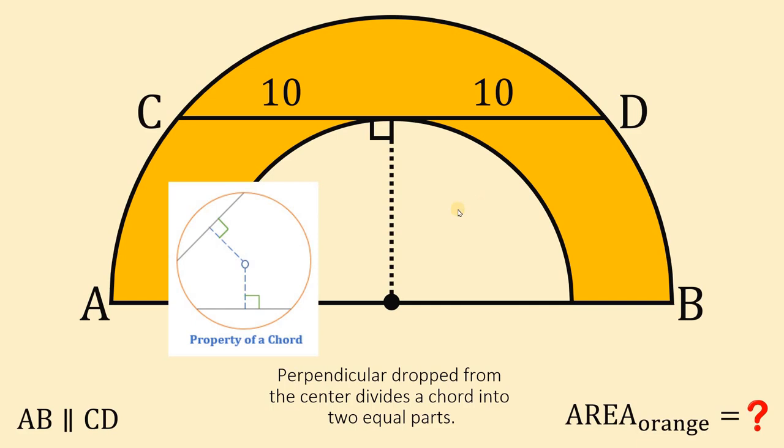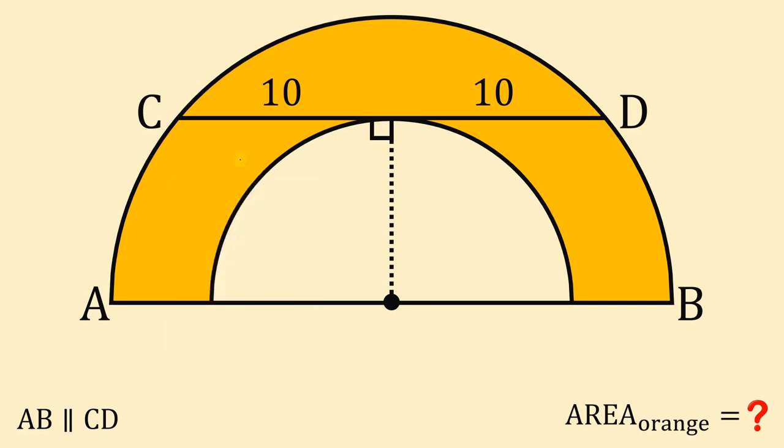What we're going to do is focus on this figure, and let's connect points C and D to the center of the semicircle. This segment right here is the radius of the big semicircle. Let's call this capital R.